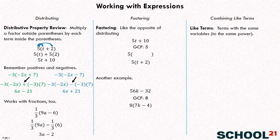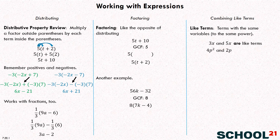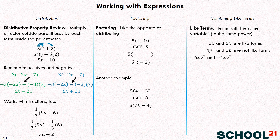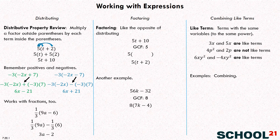Now let's go over combining like terms. Like terms are terms with the same variables to the same power. For example, three X and five X — if I have three X's and five X's, how many do I have? Eight X. Those are like terms. How about four P squared and two P — are those like terms? No, because one is P squared and the other is just P, which is P to the first power. They're not to the same power, so they're not like terms. What about six XY squared and negative four XY squared? Yes — they both have the same variables to the same power, XY squared, so those are like terms.